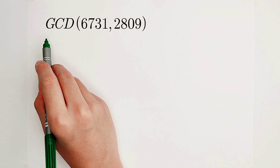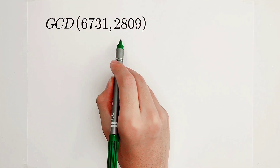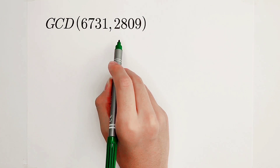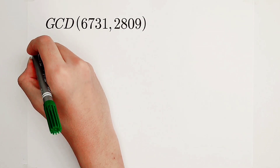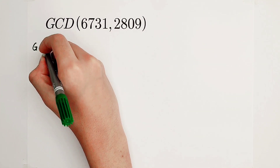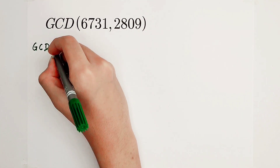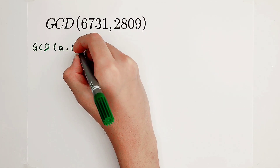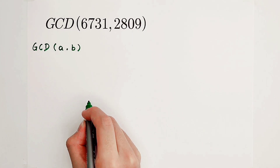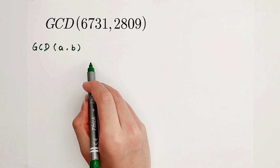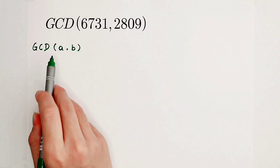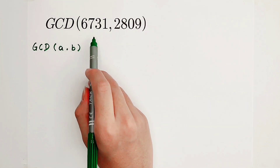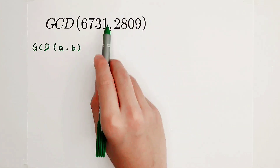The greatest common divisor of two large numbers — there is only one formula. The greatest common divisor, for example, of two numbers A and B. With more numbers, this trick also works. A is this guy, and B is this number.